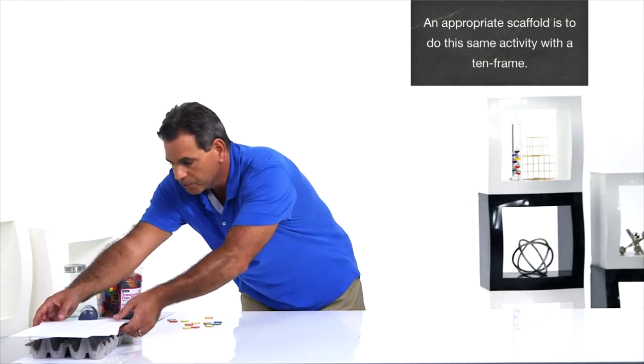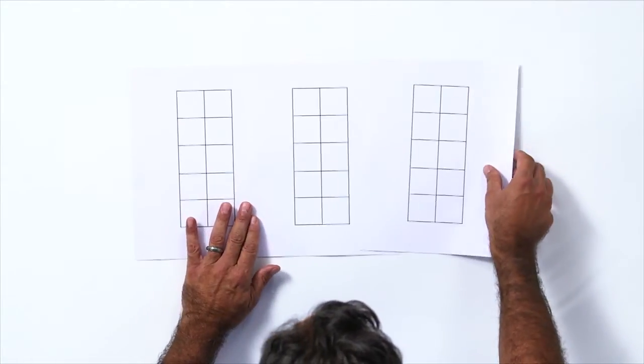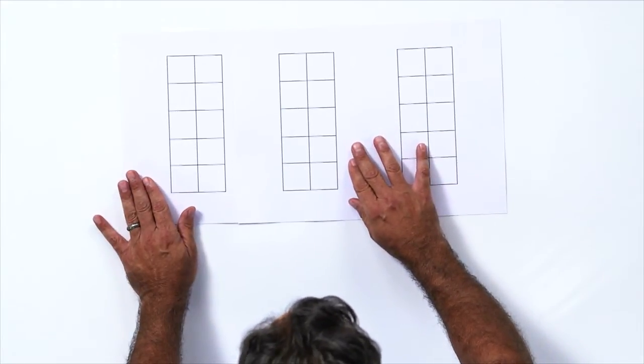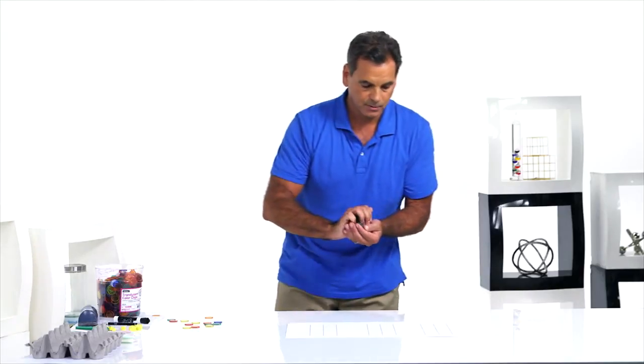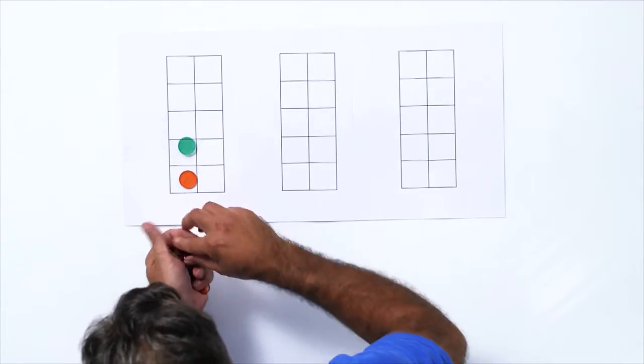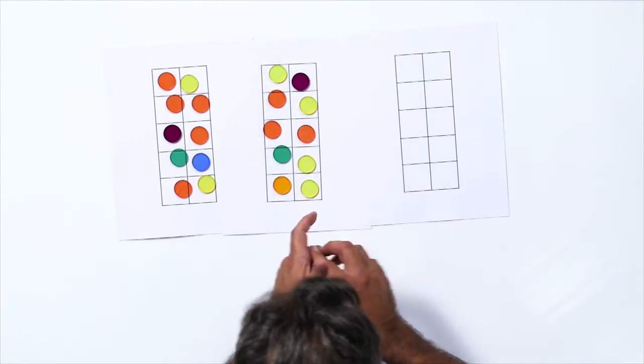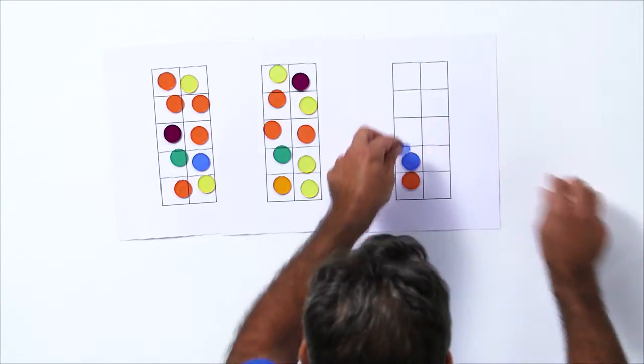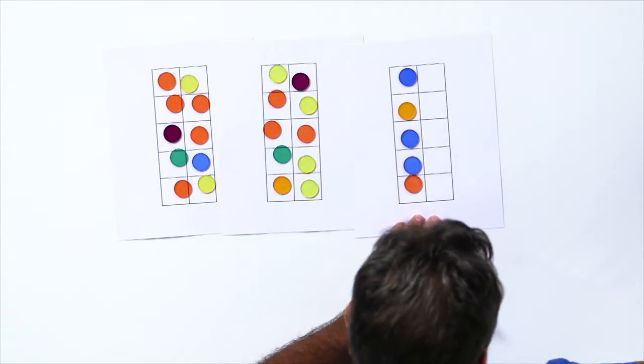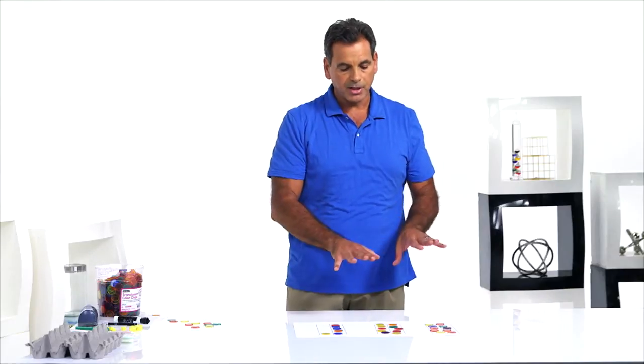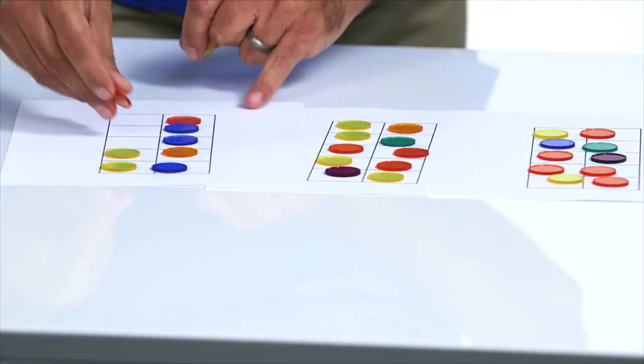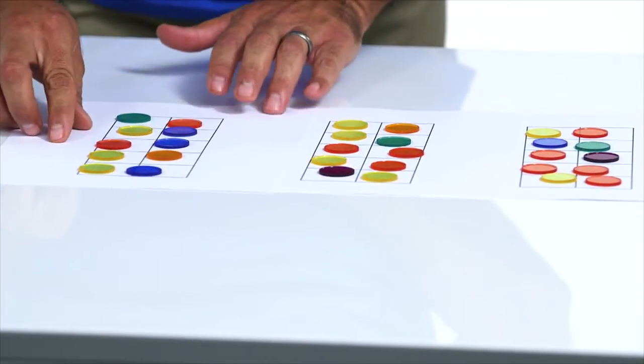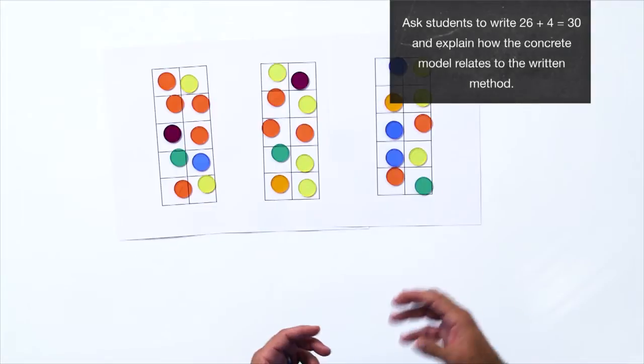26 plus 4 we'll do with tens frames. Students should have a lot of work with tens frames. And these can come in many shapes and sizes. They can be just like this on a piece of paper. They can be more fancy where they have a little depth and the counter can sit inside of it. But either way they are really good, because watch what happens. We have to put in 26. 1, 2, 3, 4, 5, 19, 20, and 6. 1, 2, 3, 4, 5, 6. It's a lot of counting, but we want the students to be practicing their counting anyway. Touching, placing, counting all at the same time. It's 26 plus 4. I have to add 4. 1, 2, 3, 4. Now a student can see I have 3 full tens frames. So 26 plus 4 is 30.